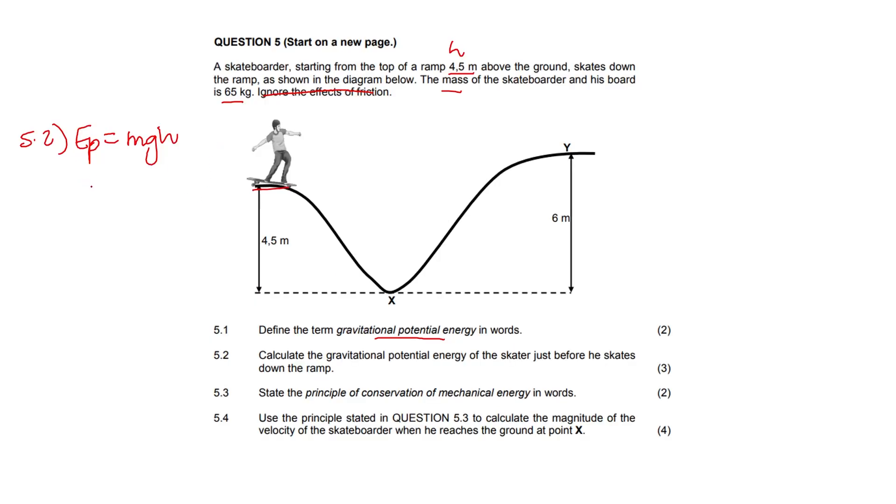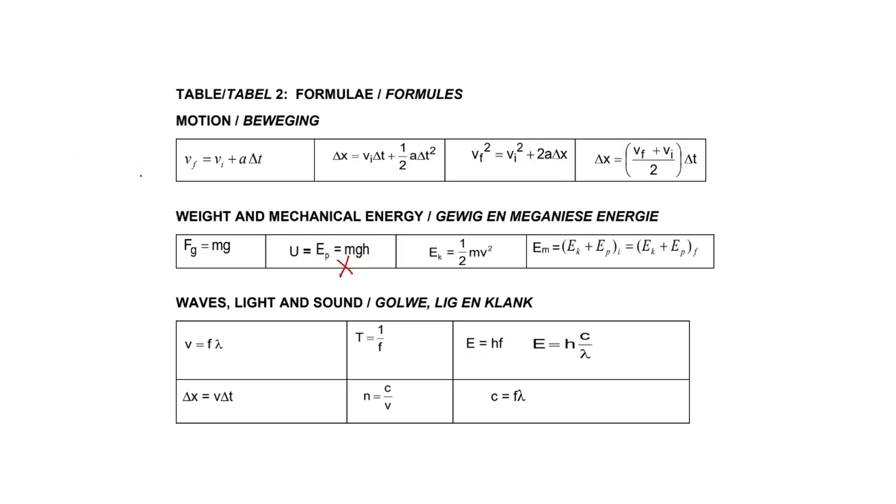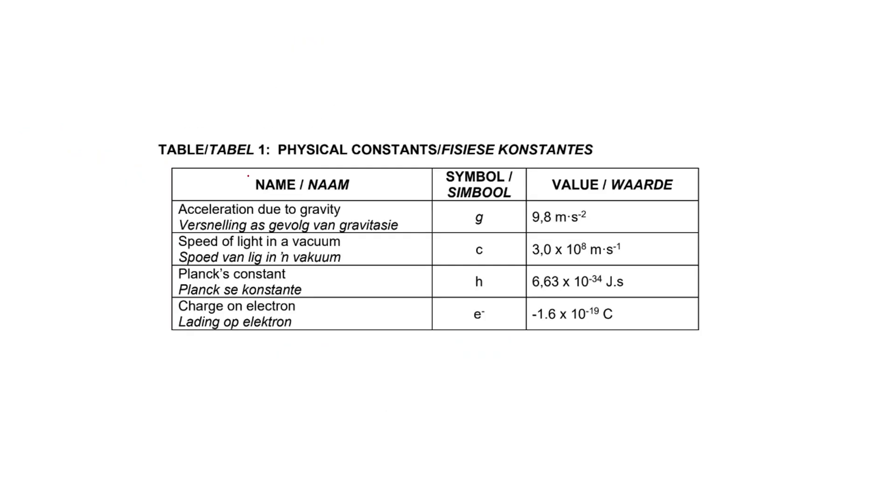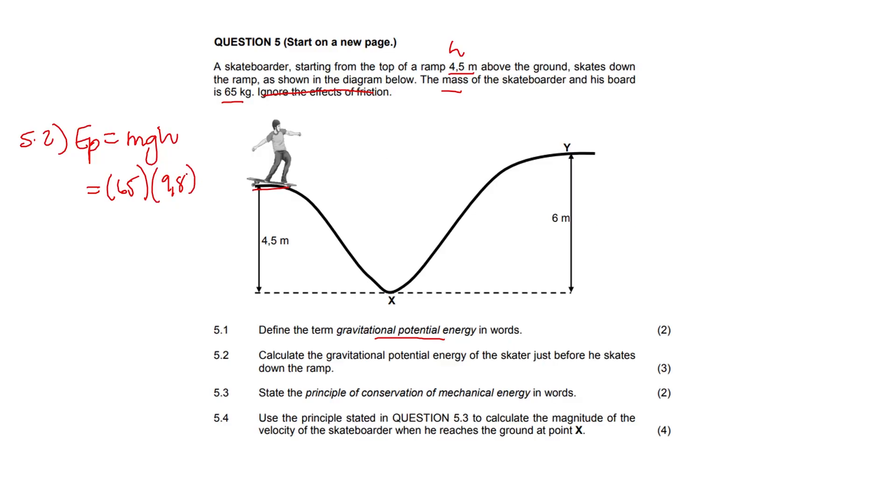We have the mass of the skateboarder which is 65 kg. We have acceleration due to gravity which is g, and that's the constant 9.8. They have given us the height that he's above the ground which is 4.5. You just jot that into your calculator: 65 times 9.8 times 4.5, and it gives you 2866.5 joules.